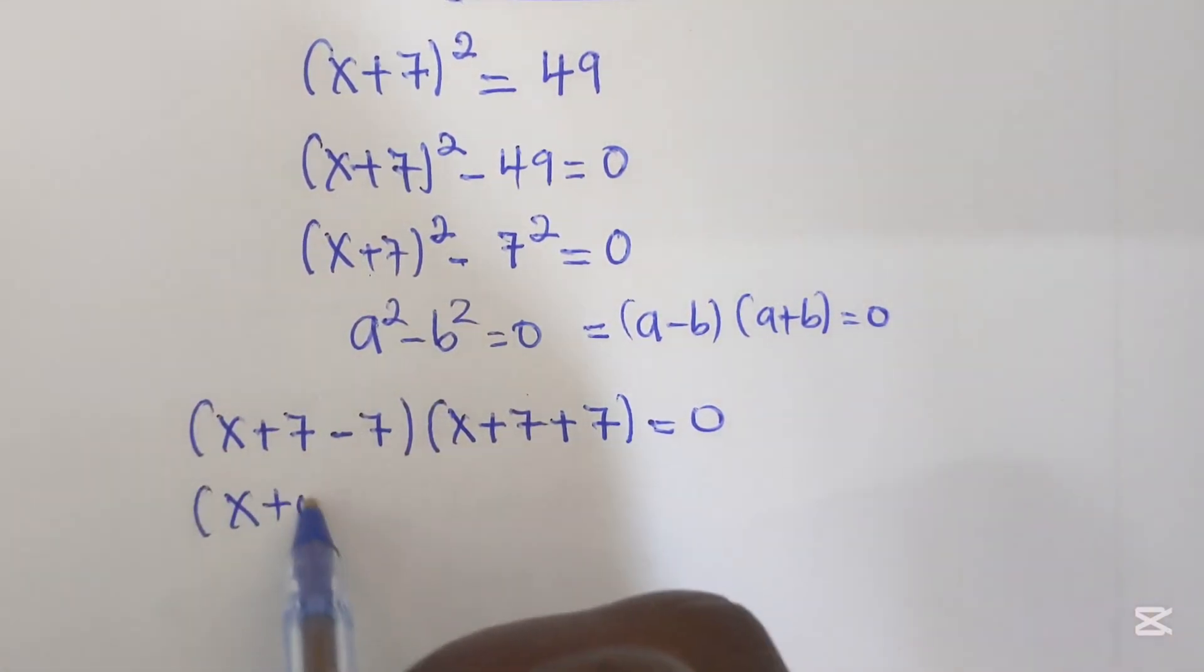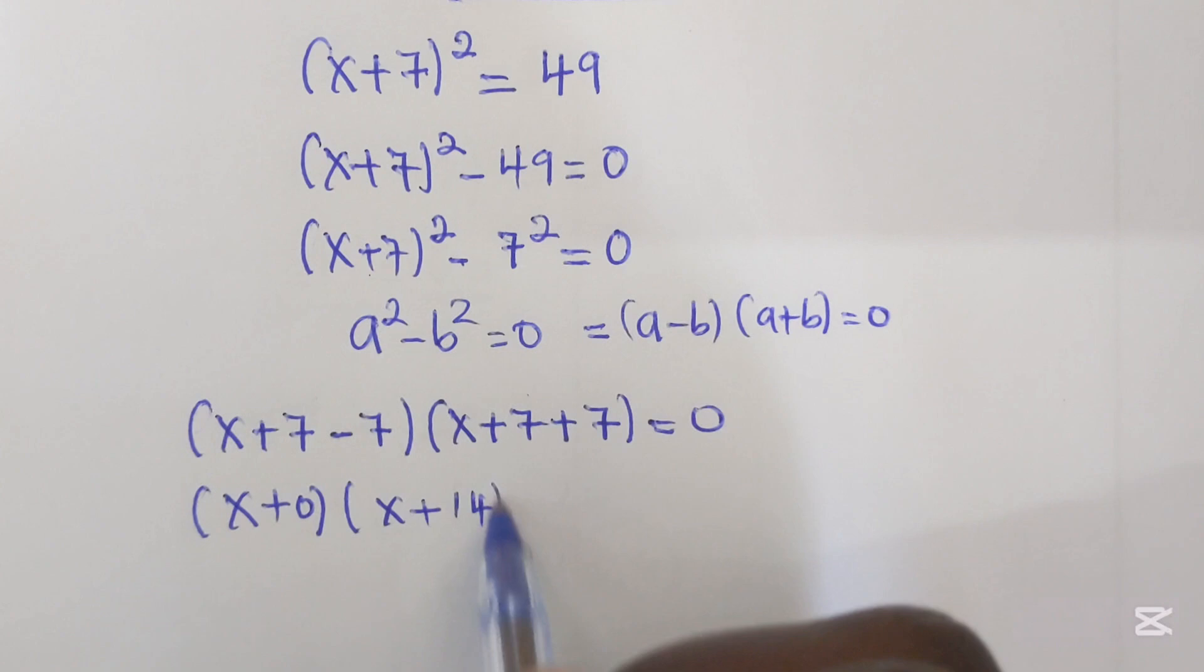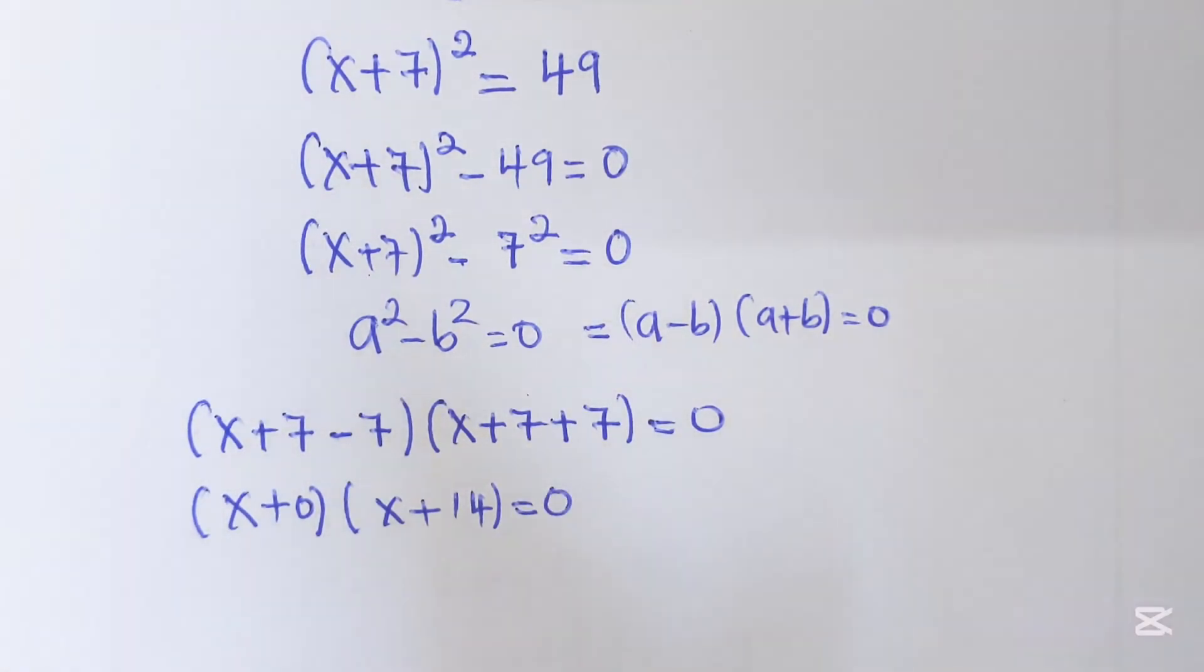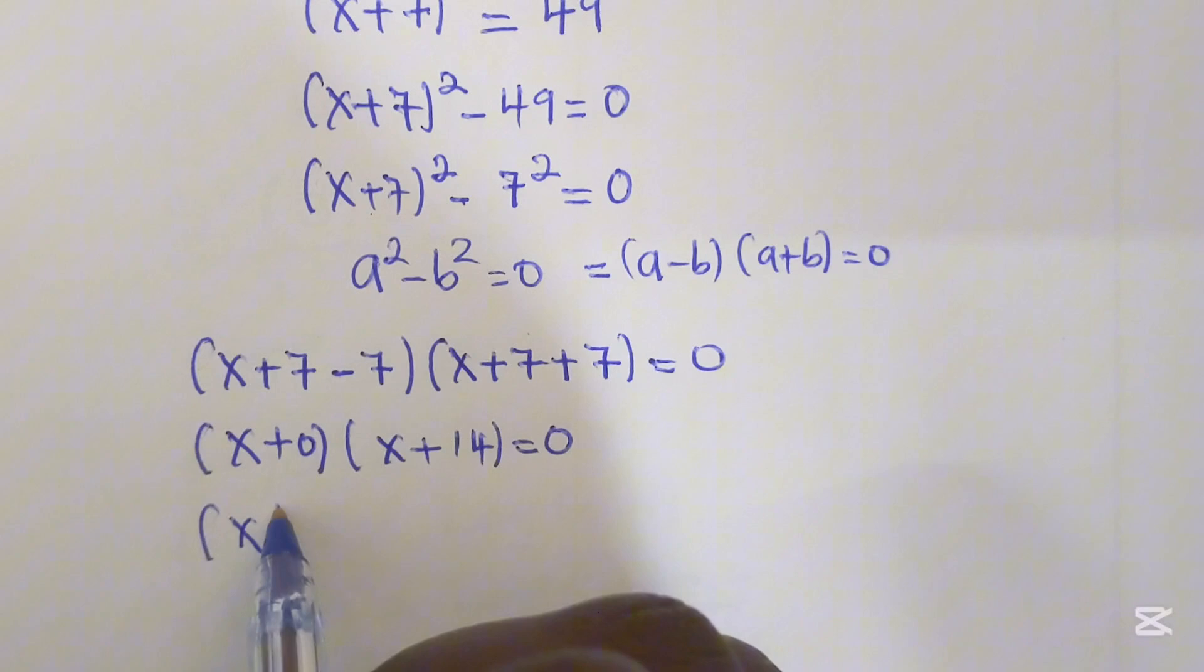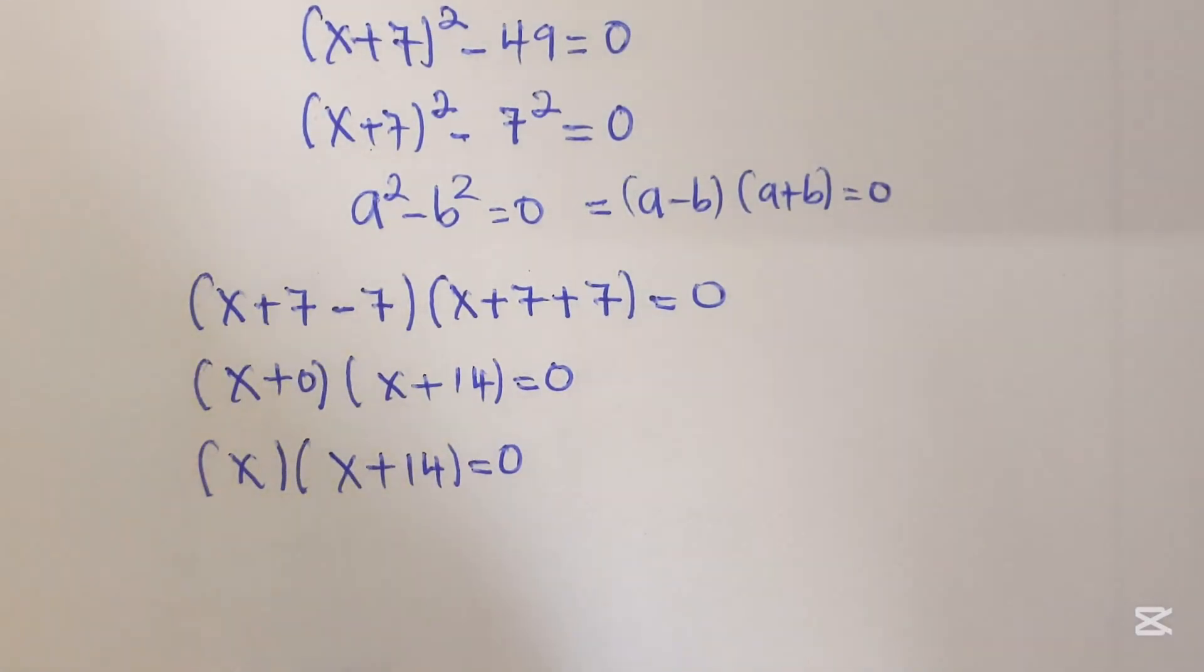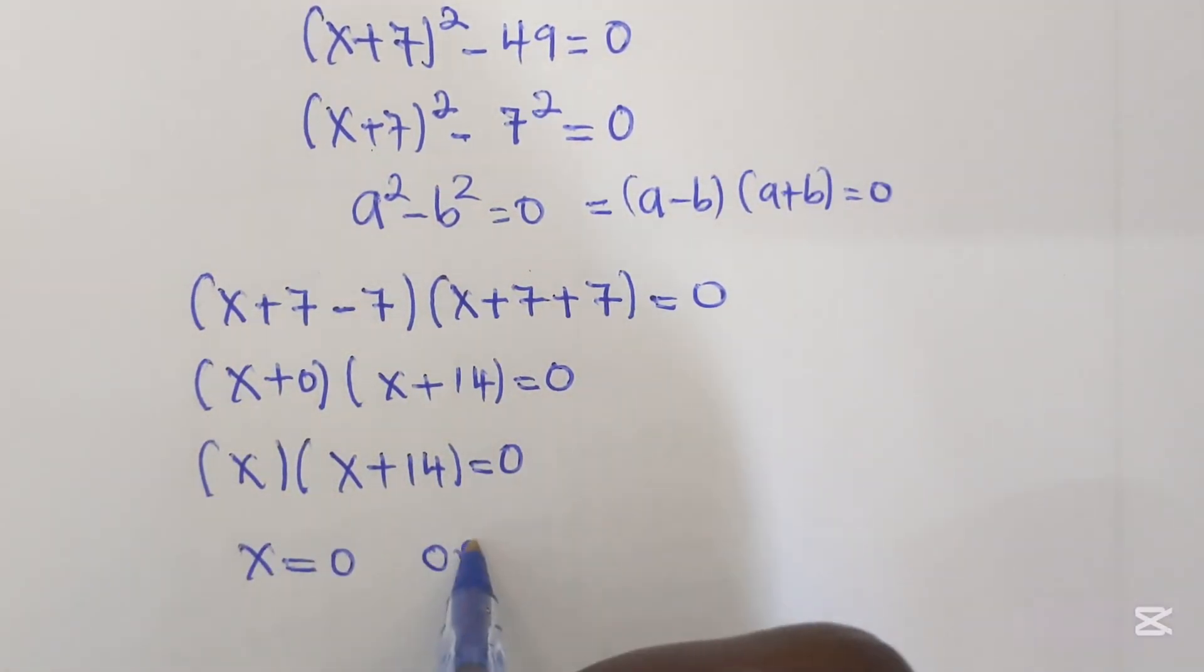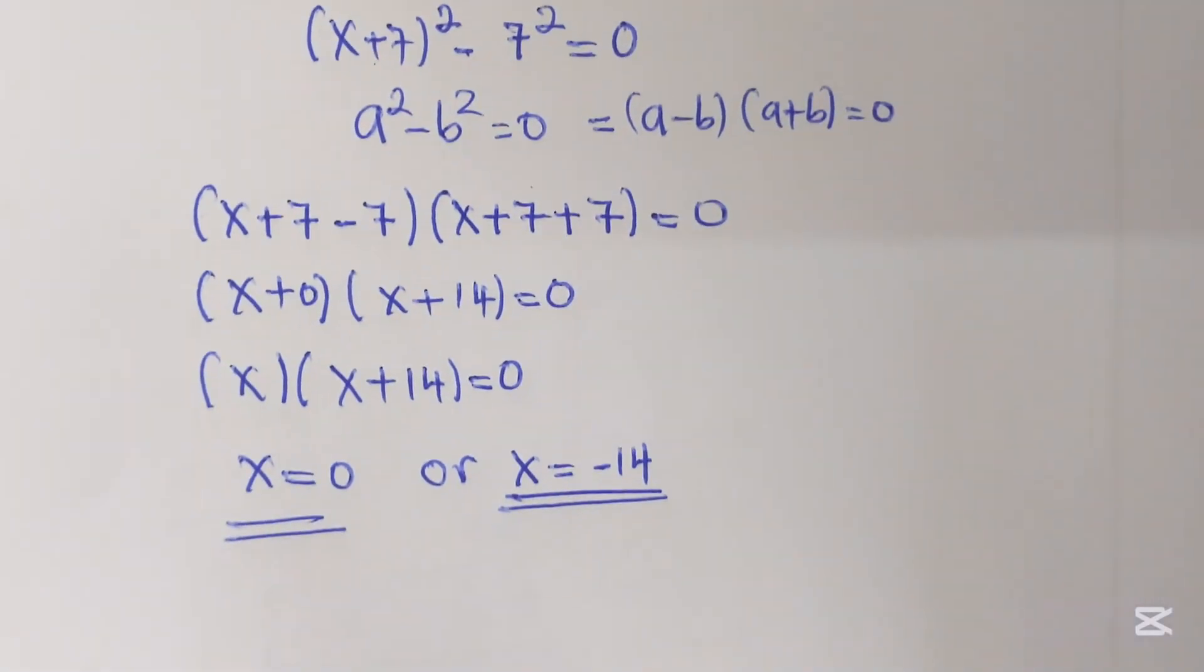Then x(x+14) = 0. So x will be 0 or x will be -14. This is our value of x.